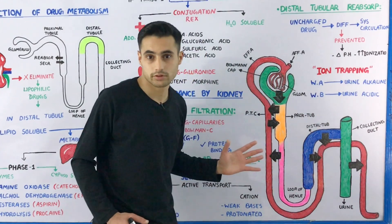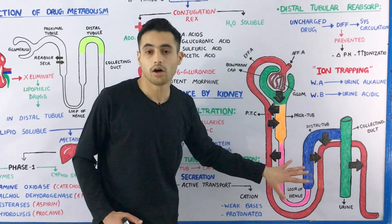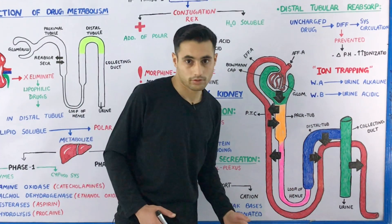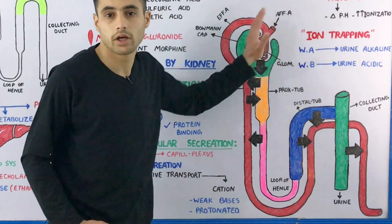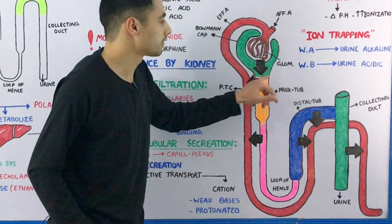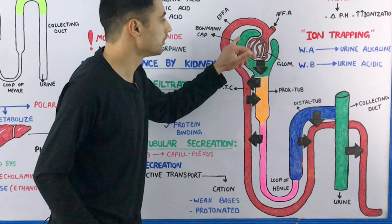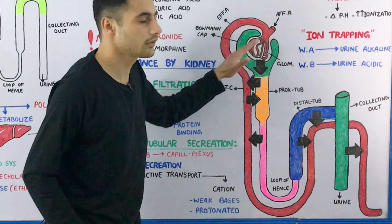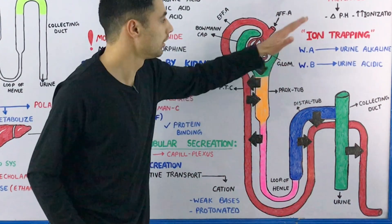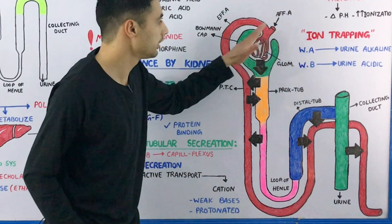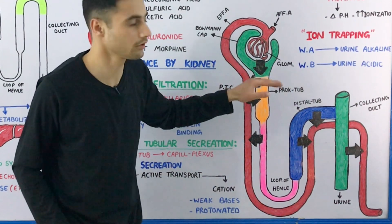Before discussing each step, you should know the anatomy of the nephron — have a look at this diagram. The afferent arteriole arrives into the Bowman's capsule, shown in green. The afferent arteriole — 'A' for afferent, 'A' for arriving — forms a capillary network or tuft known as the glomerular capillaries.